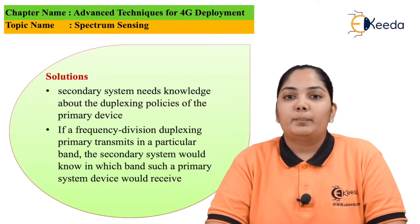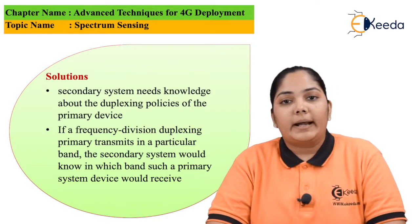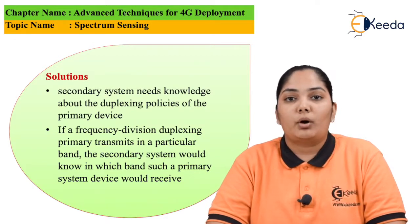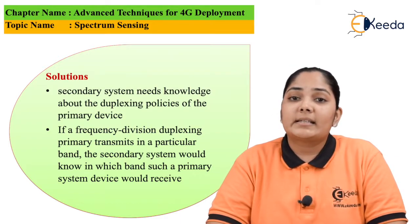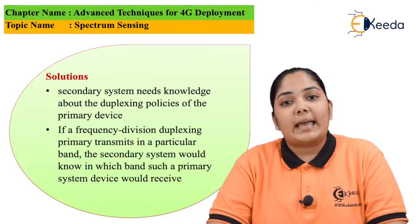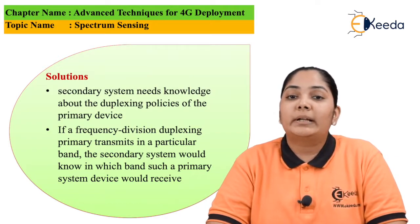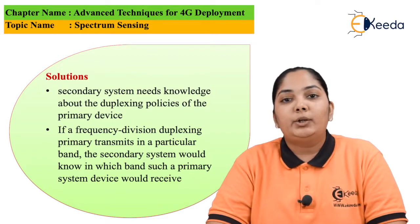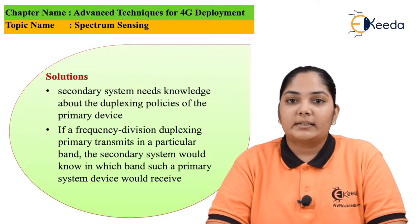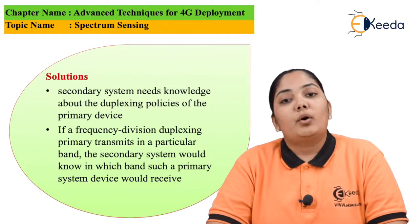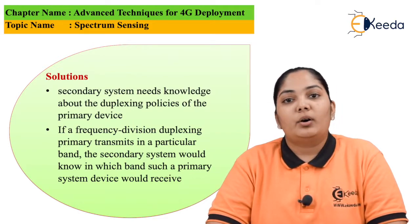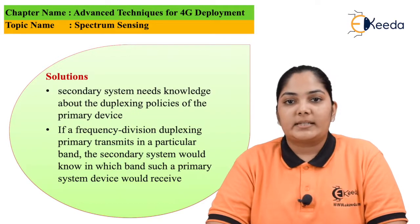But this approach of identifying the spurious emissions from the receiver has a drawback. The drawback is that since the receiver is emitting, it is not an ideal receiver. It will lead to losses in the signal, and it will also punish the good design of the receiver.